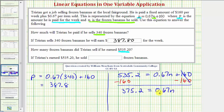0.67N means 0.67 times N. So to undo this multiplication and solve for N, we divide both sides by 0.67.